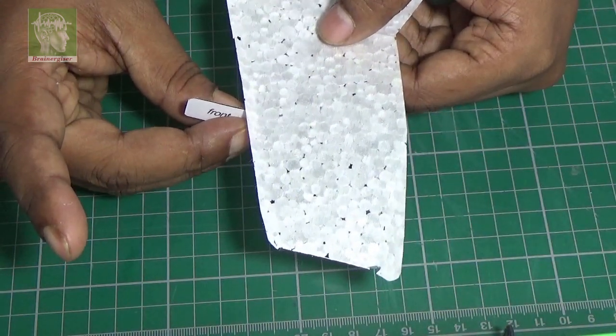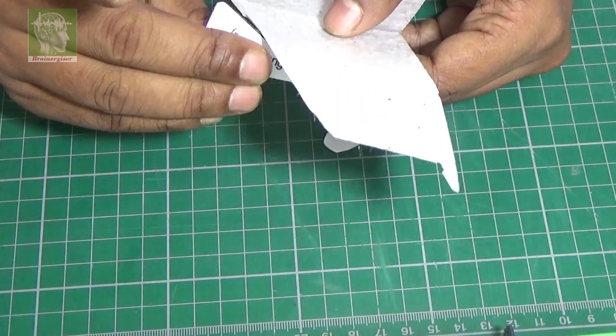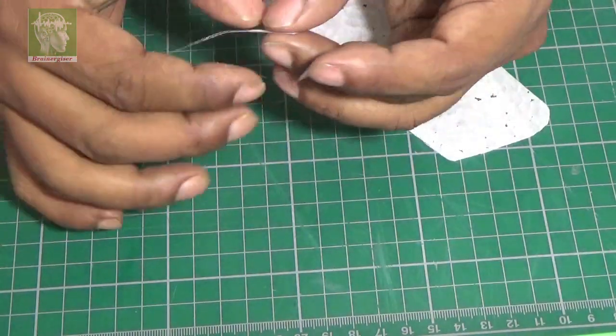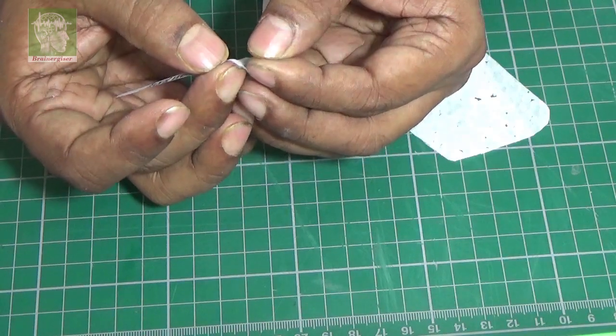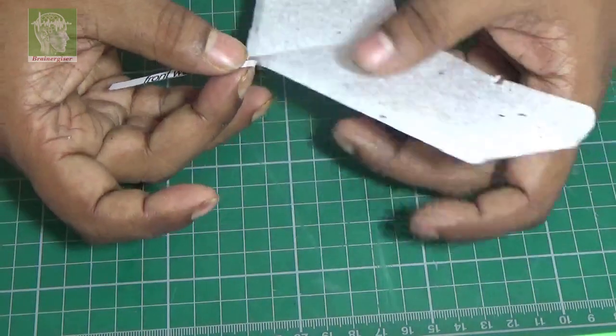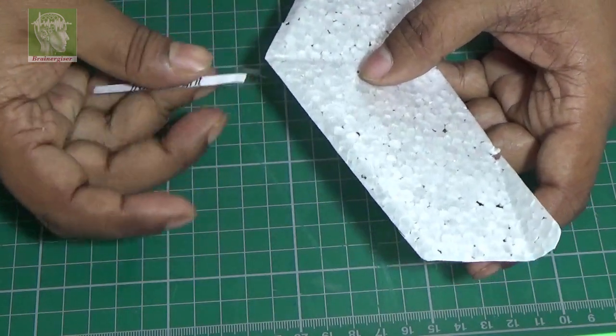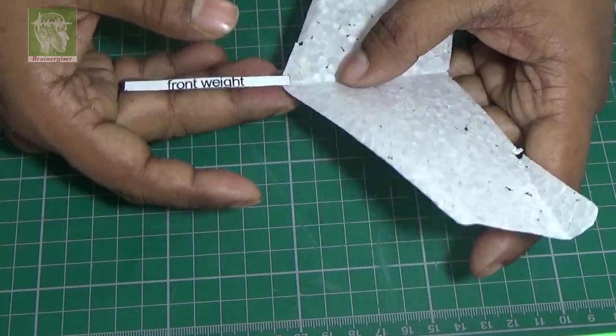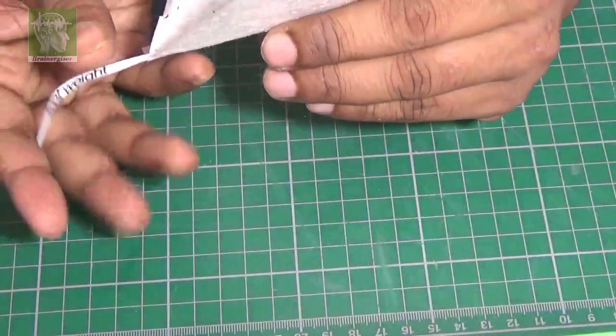Also take the front angle measuring template and measure the front angle like this. Now you have to add a weight at the nose, so add this paper with a tape at the front.